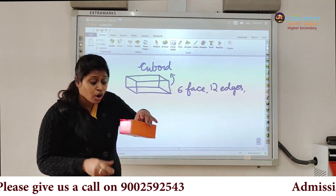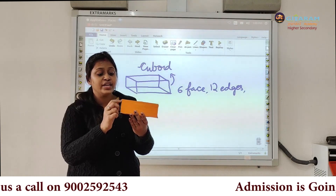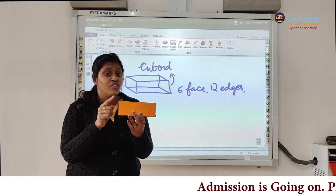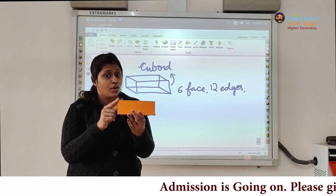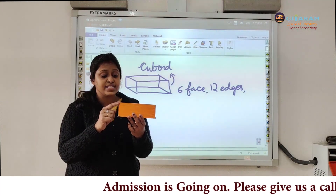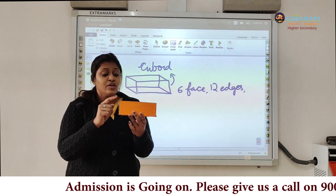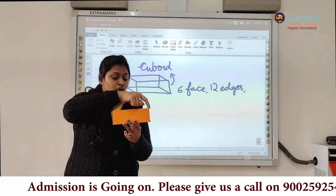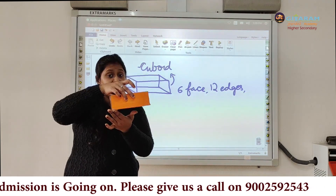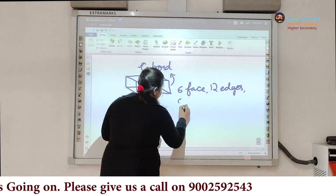So let's count the corners now. All the edges are joining at a point; this is called a vertex. Vertex and corner are the same. So how many vertices are there? One, two, three, four, five, six, seven, eight. Eight vertices.